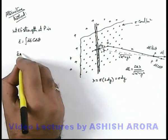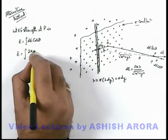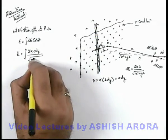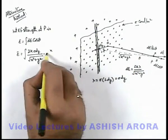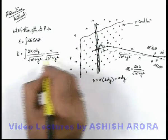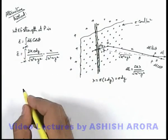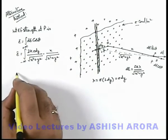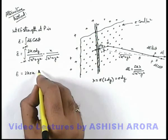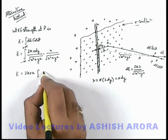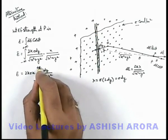Substituting into the expression, the electric field at point P is the integration of 2k·lambda, written as sigma·dy, divided by √(x² + y²), multiplied by cos θ, which in this triangle equals x divided by √(x² + y²), integrated with limits of dy from minus infinity to plus infinity. So E can be written as 2kσx, which is a constant taken out, times the integration of dy divided by (x² + y²), integrated from minus infinity to plus infinity.